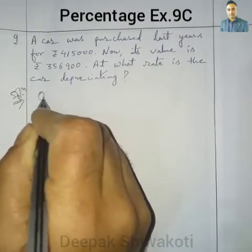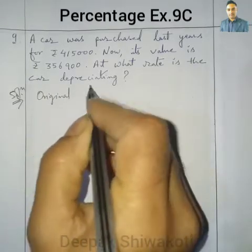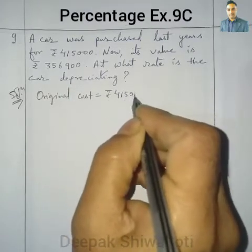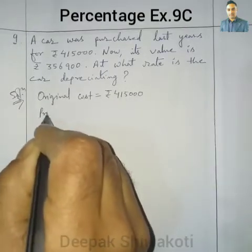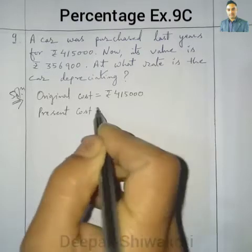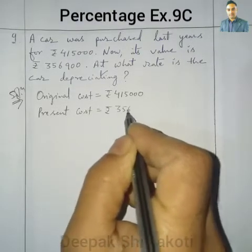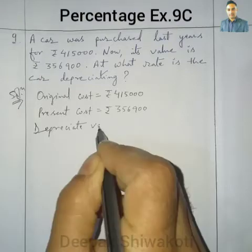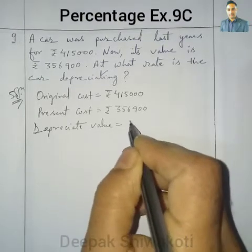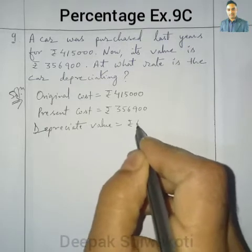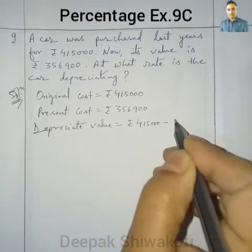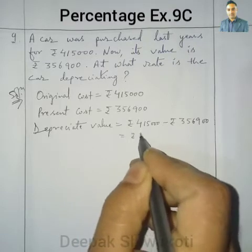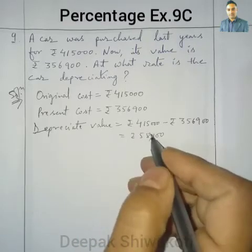Original cost of the car is equal to rupees 4,15,000. Now the present cost of the car is equal to rupees 3,56,900. So the decrease in value, or depreciation value, is equal to 4,15,000 minus 3,56,900, which is equal to rupees 58,100.